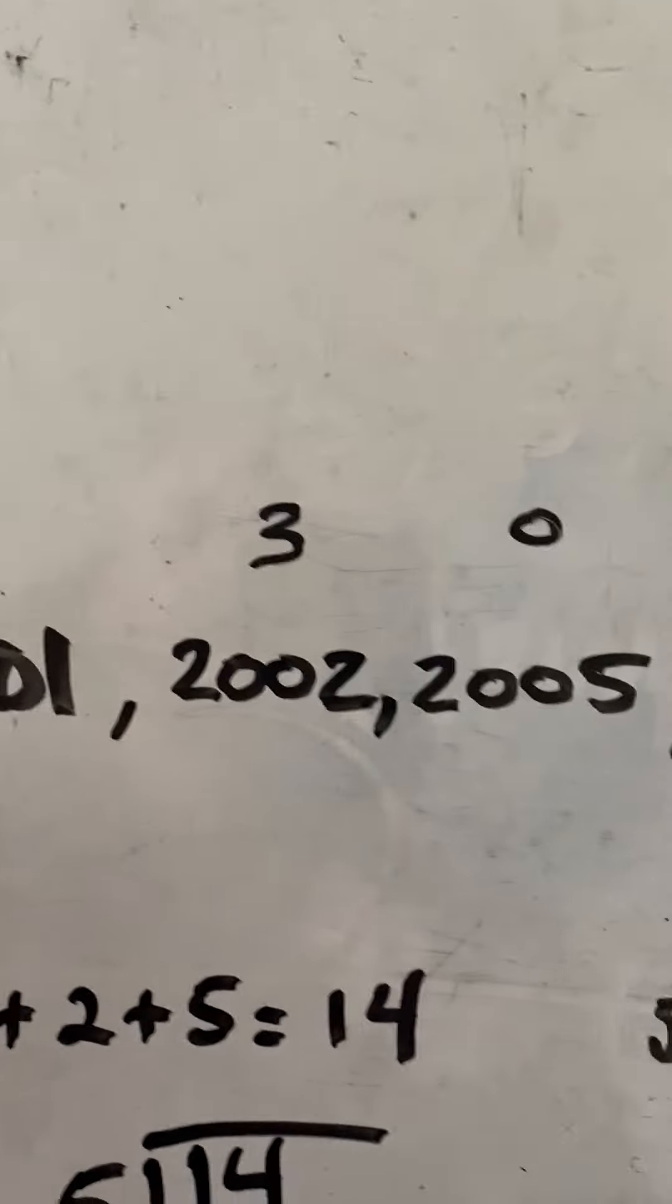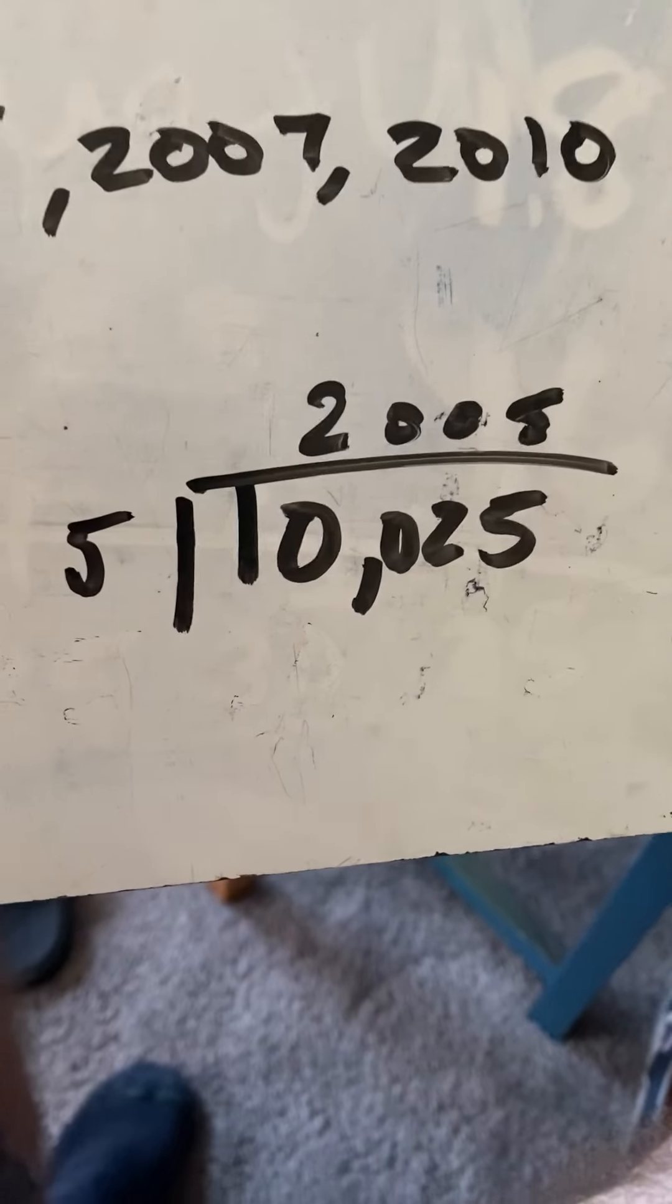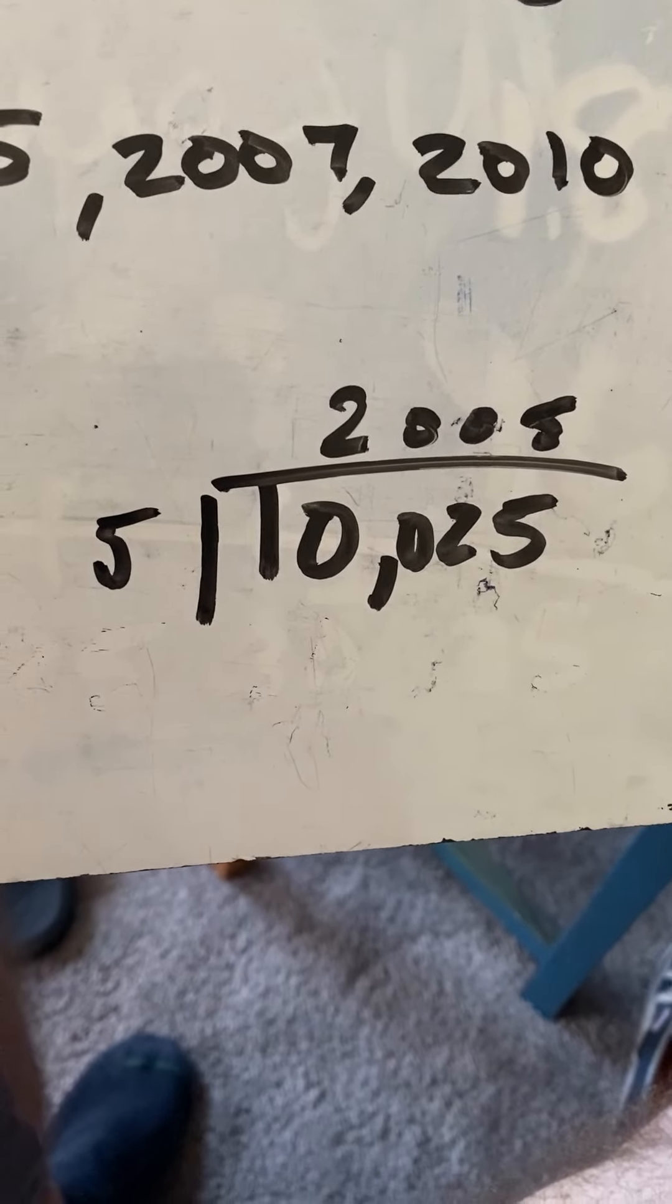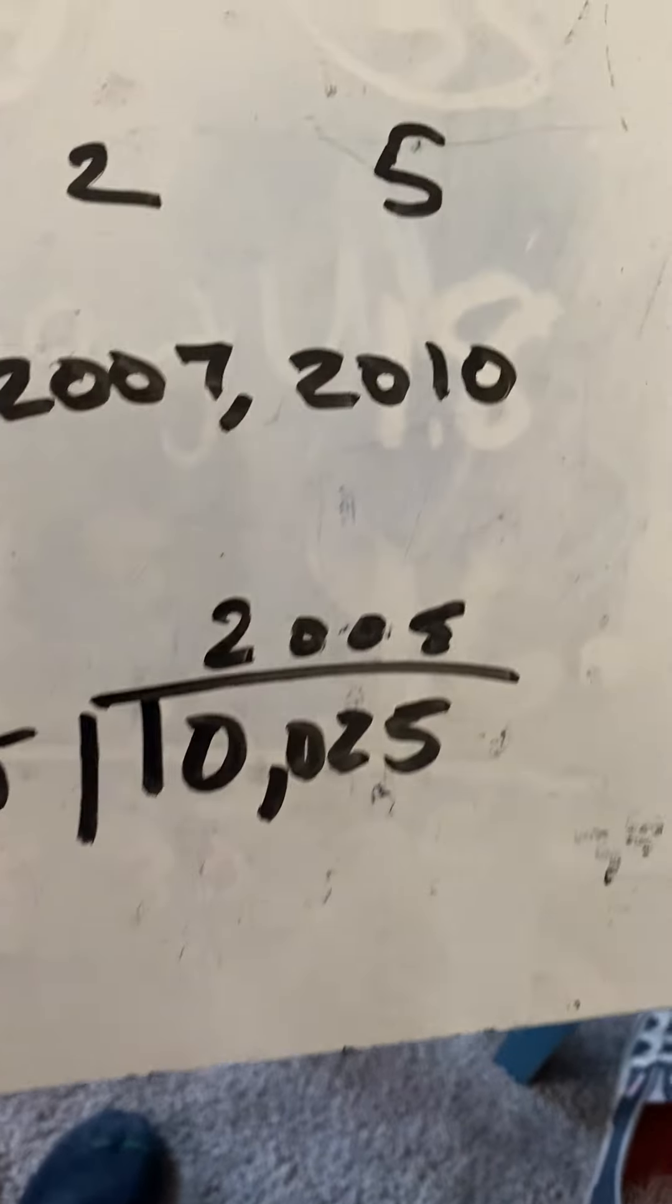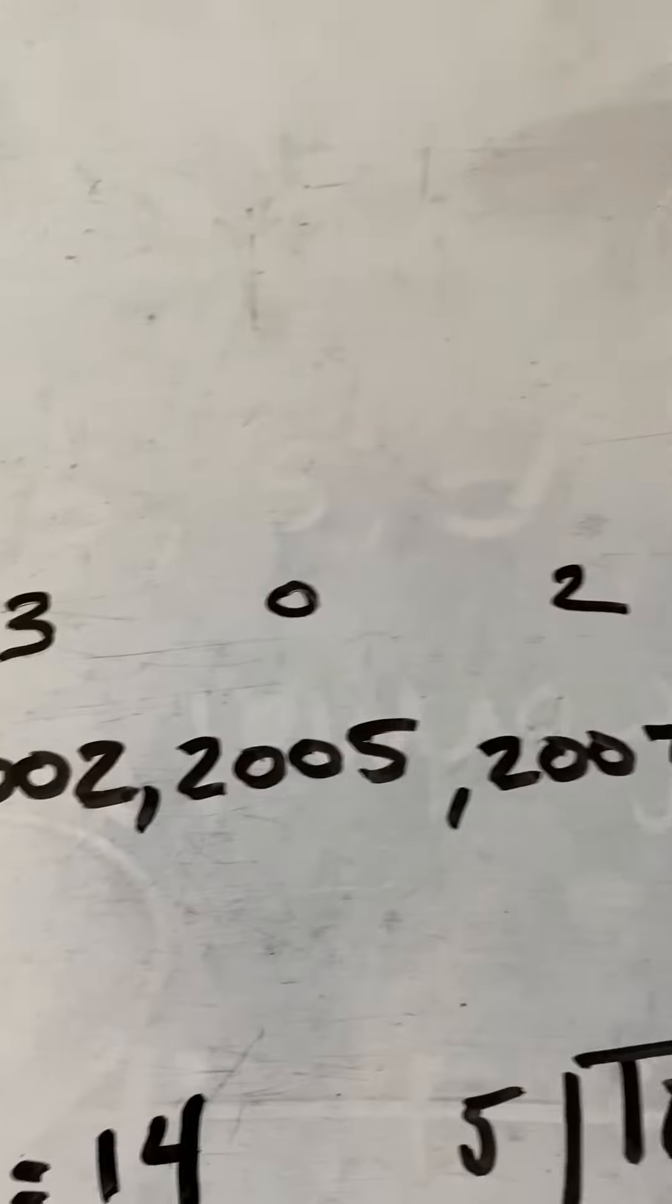There were 1, 2, 3, 4, 5 cars. So I take that 10,025 and divide it by 5. That gave me 2,005. That's my point right here. My center point is 2005. This is the mean.